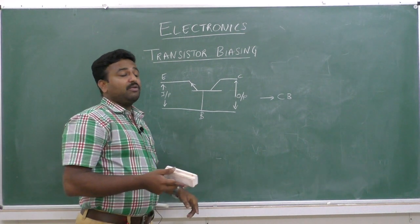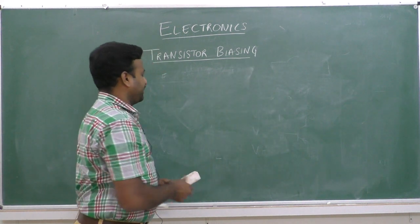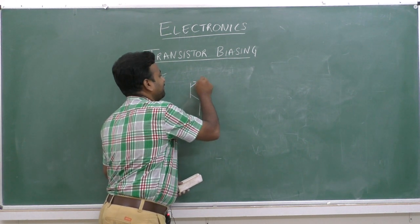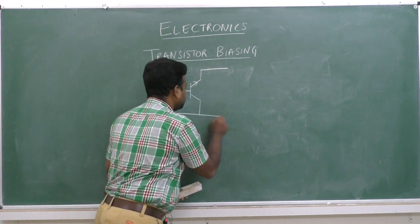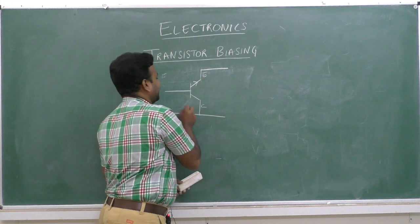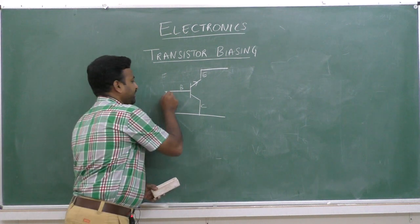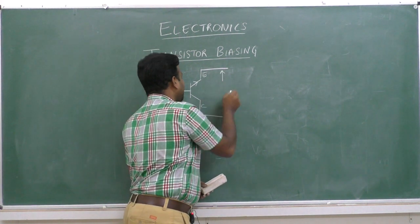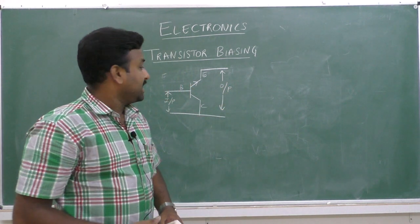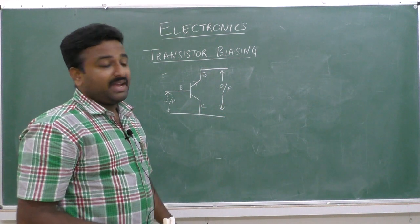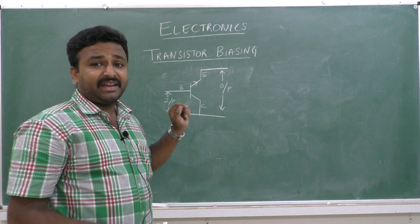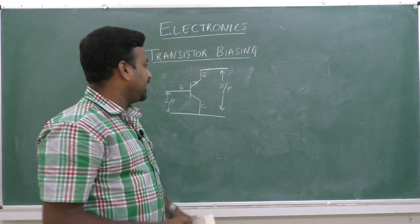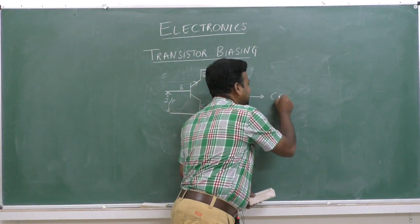We have one more configuration — the common collector configuration. In common collector configuration, input is given to the base region, output is taken from the emitter region, whereas the collector is shared between both input and output. Therefore, this configuration is termed as CC configuration.